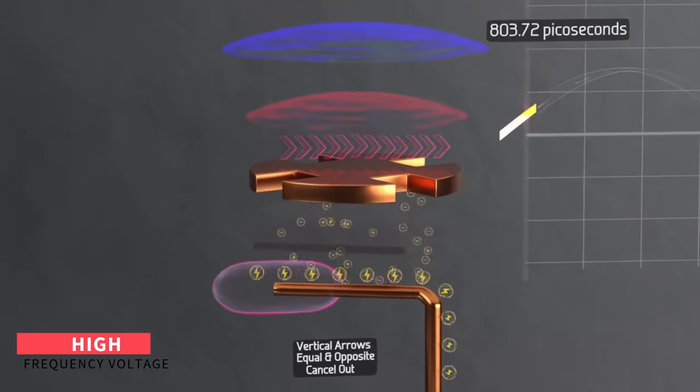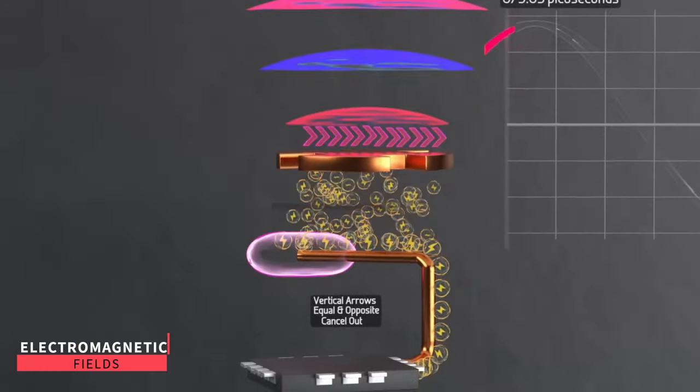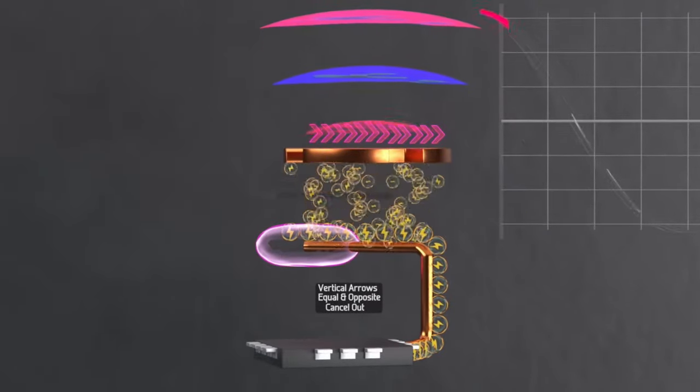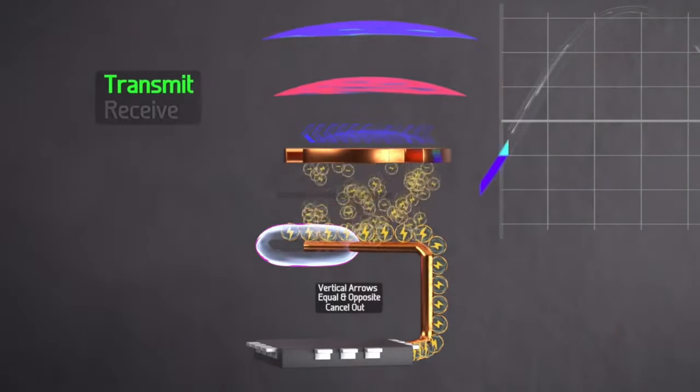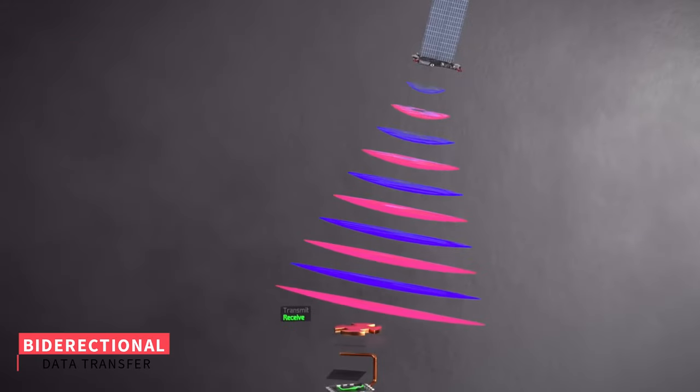By applying high frequency voltage to copper feed lines, electromagnetic fields are created, eventually forming the bases of the transmitted signals. Moreover, these antennas can switch between transmitting and receiving modes, enabling bidirectional data transfer.